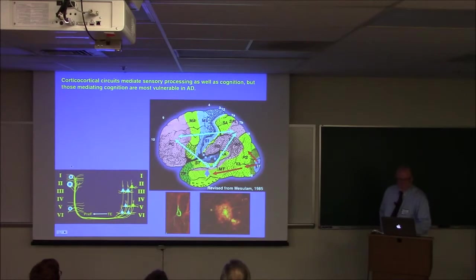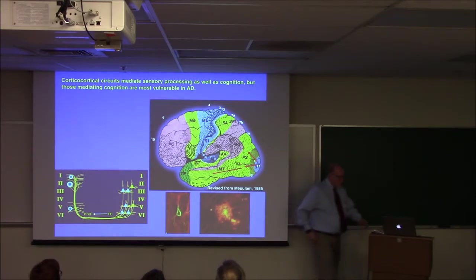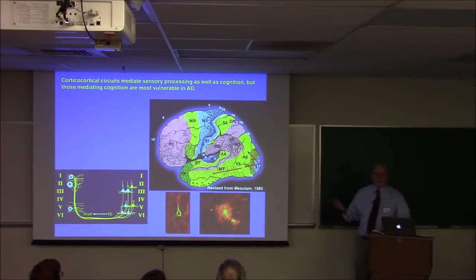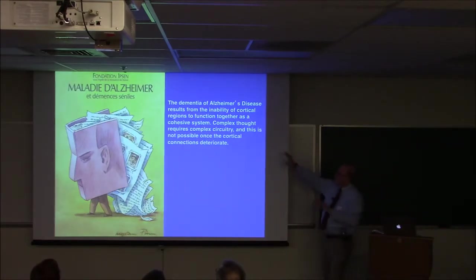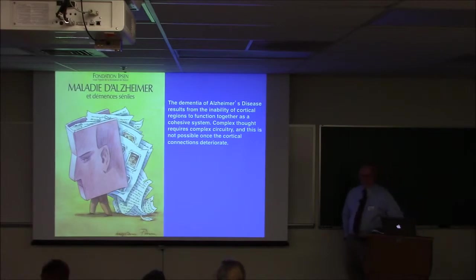So what happens is these are visual circuits that mediate vision. This goes into these pink areas, what we call supramodal areas. In other words, that's where all the modalities converge. And they're connected to each other from these lines. And those are the circuits that are really vulnerable to degeneration. So you have a diagram here showing tangles in the cell bodies, plaques disrupting the terminals. And so this circuit from temporal lobe to prefrontal cortex ends up badly disrupted in Alzheimer's disease. And it literally pretty much goes away, those connections in severe Alzheimer's, where the visual system is affected to a lesser degree. And if you look at an Alzheimer's patient, they can still see. So, we've described the dementia of Alzheimer's, and it results from the inability of cortical regions to function together as a cohesive system. All of your different cortical areas are firing and communicating with each other constantly, especially the association areas. So complex thought requires complex circuitry, and this is not possible once those cortical connections deteriorate.